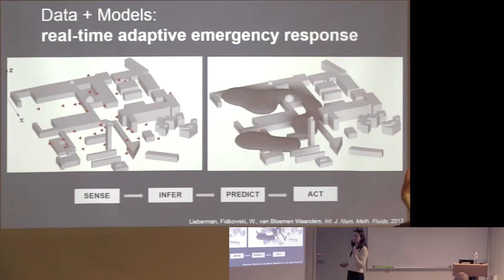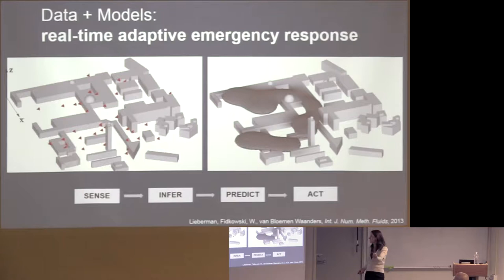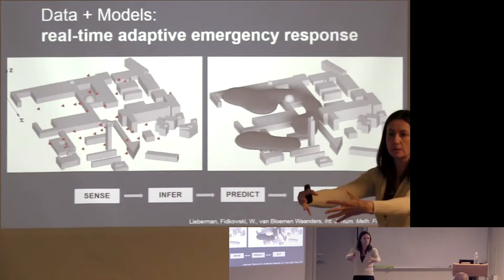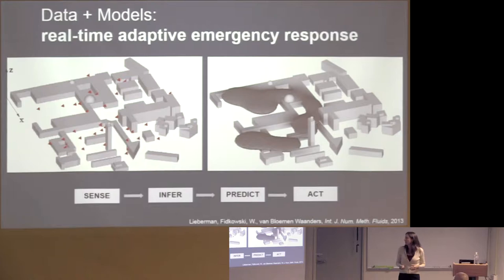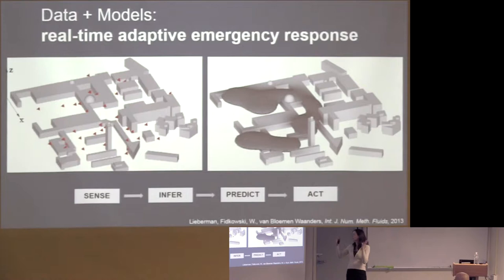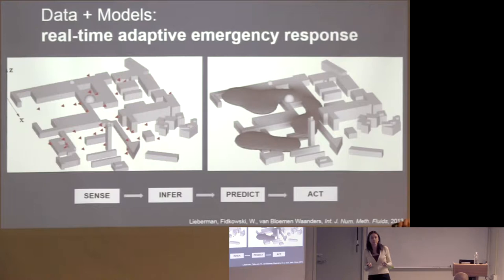Notionally, there are sensors distributed around campus, and now imagine some kind of event where a contaminant gets released. The question is: can you collect data from the sensors? Can you solve an inference problem to figure out where the contaminant release took place? Can you make predictions to say where will it go given the current wind conditions? And then take actions — maybe to evacuate people. The sense, infer, predict, and act problem. Of course, we could get a high-fidelity 3D model of campus and run CFD, but that would take hours if not days — not on any useful timescale for decisions.